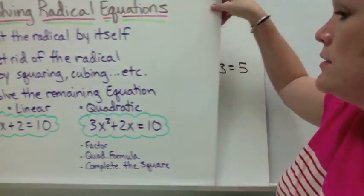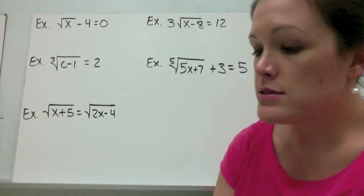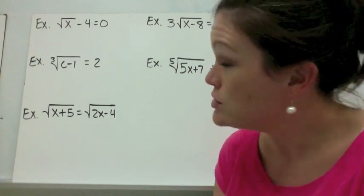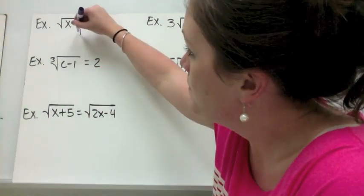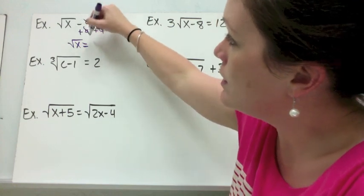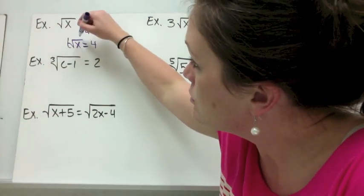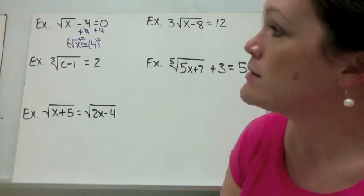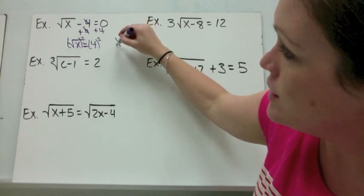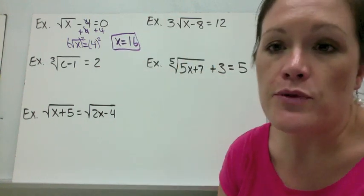Let's take a look at some examples. We have the square root of x minus 4 equals 0. We want to get the radical by itself, so we add 4 and get √x = 4. To get rid of the square root, we square both sides — that's the inverse operation. The square root of x squared cancels out, and we have x equals 4 squared, which is 16.